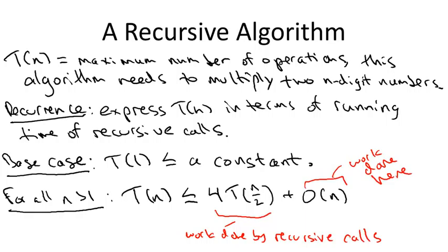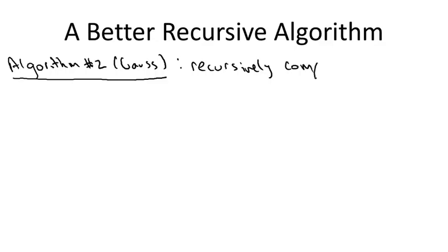Let's move on to the second, more clever recursive algorithm for integer multiplication, which dates back to Gauss. Gauss's insight was to realize that in the expression star that we're trying to evaluate, there's really only three fundamental quantities that we care about: the coefficients for each of the three terms in the expression. So this leads us to hope that perhaps we can compute these three quantities using only three recursive calls rather than four. And indeed, we can. So what we do is we recursively compute A times C, like before, and B times D, like before. But then we compute the product of A plus B with C plus D.